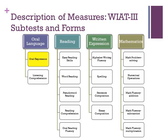The WIAT-3 has 16 different subtests. It has one form, and the entire test can take anywhere from 30 to 145 minutes, depending on the examinee's grade level, performance, and behavior during testing.